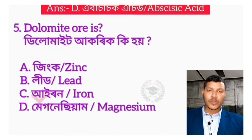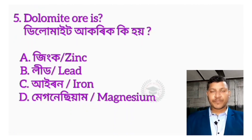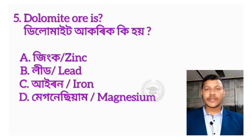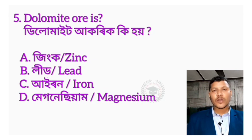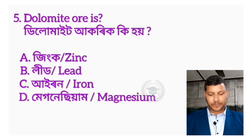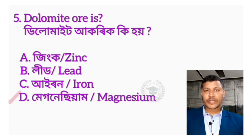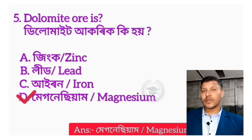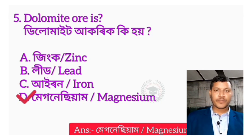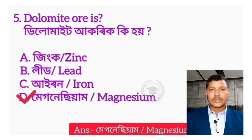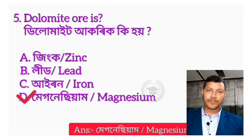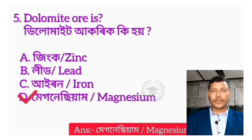Question number 5 is about Dolomite. Dolomite contains zinc, iron, and magnesium. So we have to talk about magnesium here.